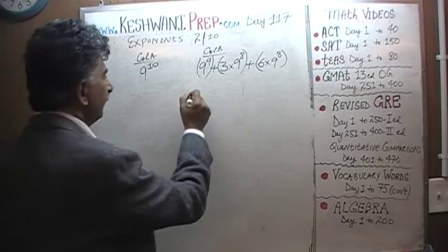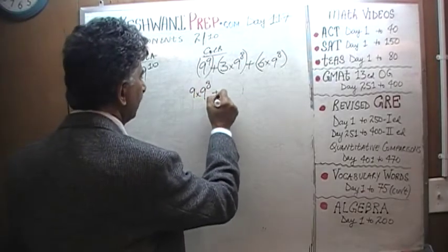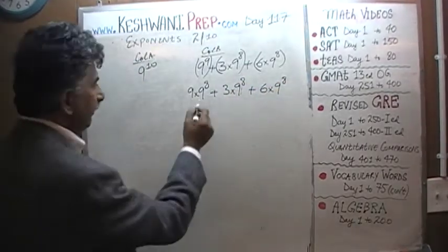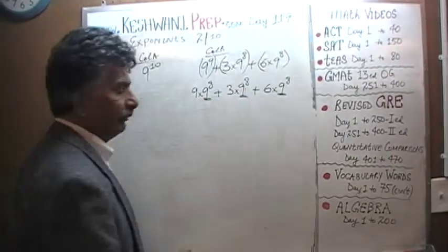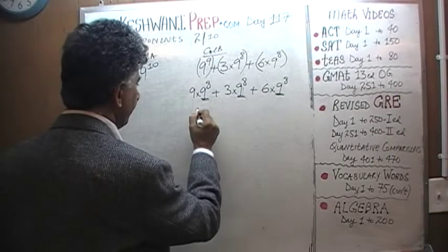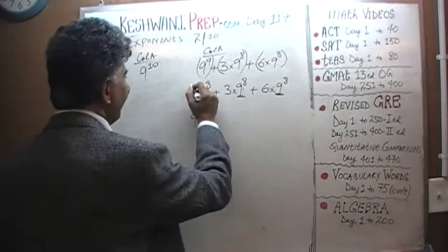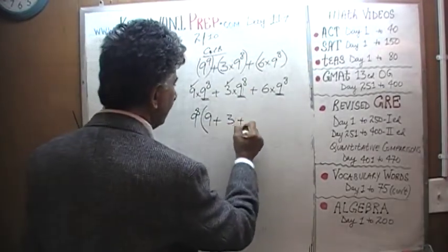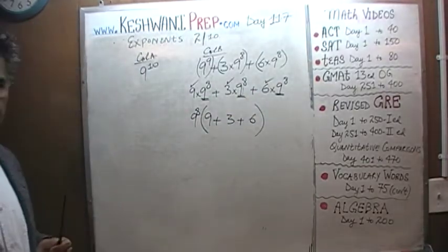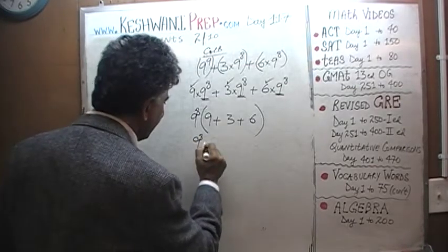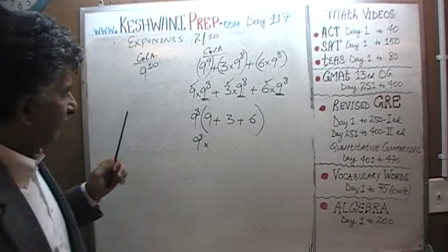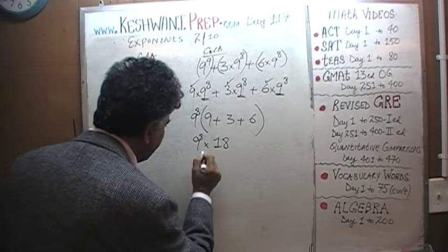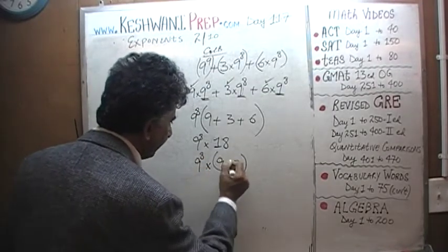9 raised to 9 can be written as 9 times 9 raised to 8, plus 3 times 9 raised to 8, plus 6 times 9 raised to 8. As you can see, 9 raised to 8 is the common factor. We're going to take it out. Once we take out 9 raised to 8, we are left with 9 from the first term, plus 3 from the second term, plus 6 from the third term. That gives us 9 raised to 8 times 18. 18 can be written as 9 times 2.